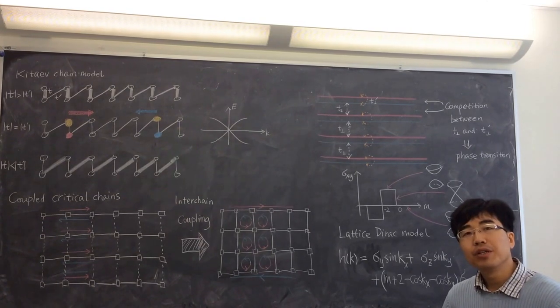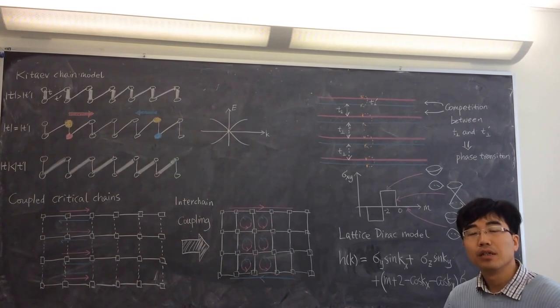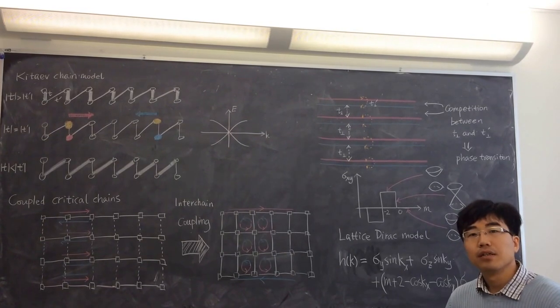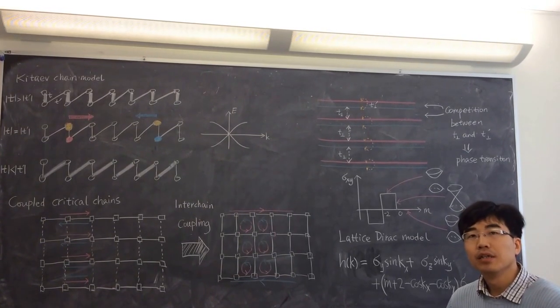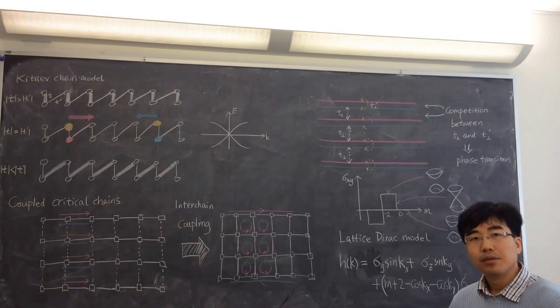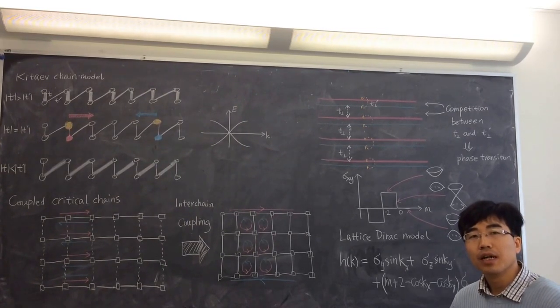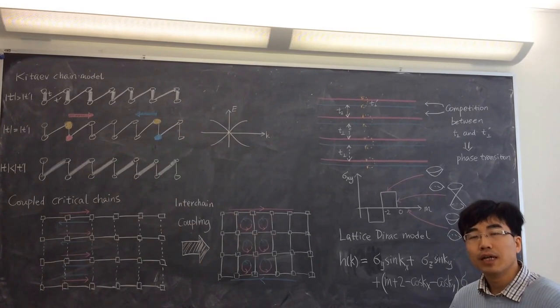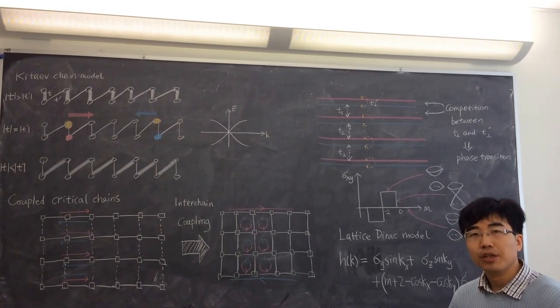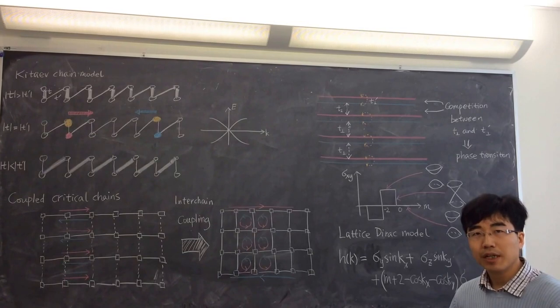And another important information we learn from this class is that the quantum anomalous Hall state itself, that means the quantum Hall state, the quantum Hall conductance can be realized in a lattice model with full lattice translation symmetry without any external magnetic field.